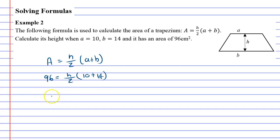Now, I can see I can simplify something, so I'm just going to do it. So, 96 equals h over 2, bracket. And I'm just going to say that's 24. 10 plus 14 is 24, right? And we also know we should have a times there.